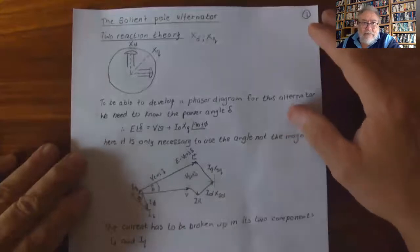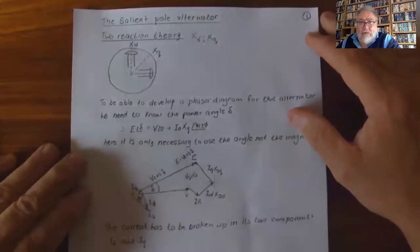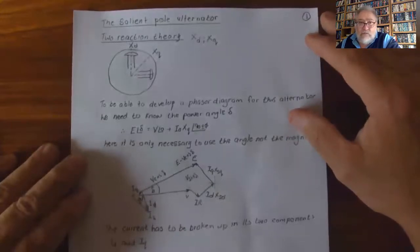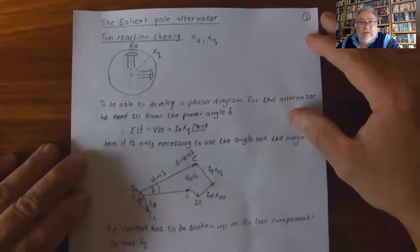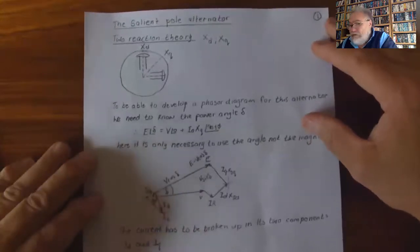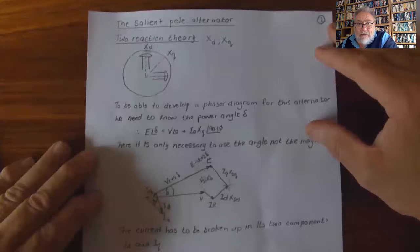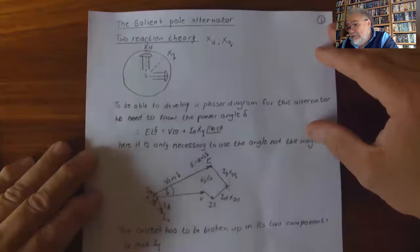Good day. Today we are going to do Chapter 4, which is the salient pole alternator and motor. Here we are going to consider the two-reaction theory, where we have an interpolar flux and a direct flux — one is called the direct flux and the other is called the quadrature axis.